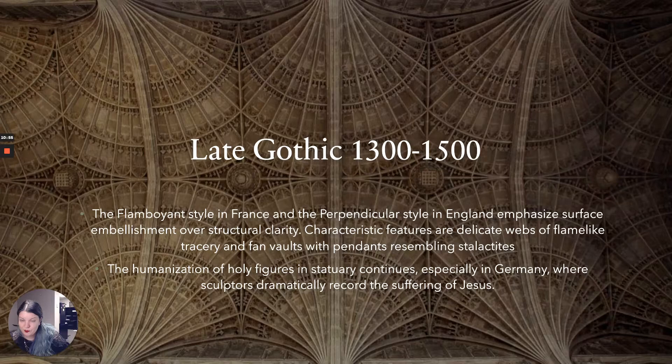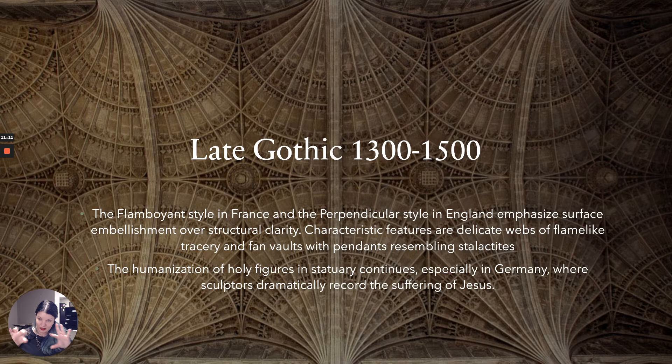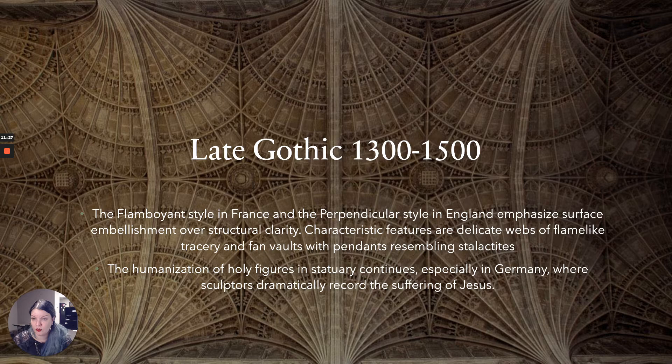The Late Gothic runs from 1300 to 1500. We have the Flamboyant style in France and the Perpendicular style in England, both emphasizing surface embellishment over structural clarity. Instead of only having decorative elements that serve a structural purpose, we start seeing decorative web-like works. Characteristic features are delicate webs of flame-like tracery — particularly in the Flamboyant style — and fan vaults with pendants resembling stalactites, particularly in the Perpendicular style.